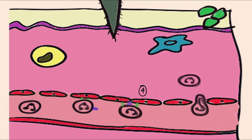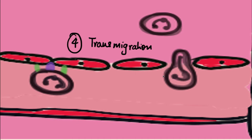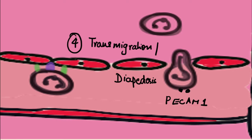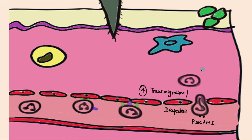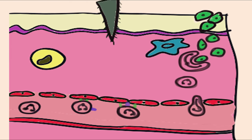The fourth cellular event is transmigration, also called diapedesis: PMN cells squeeze between endothelial cells and move into the extravascular space. Diapedesis is facilitated by PECAM-1 (platelet endothelial cell adhesion molecule-1), expressed by the PMNs. The fifth step is chemotaxis — the active movement of the cell toward a chemical gradient. Exogenous bacteria release certain metabolic enzymes that act as a chemical gradient, and the neutrophil moves toward it.